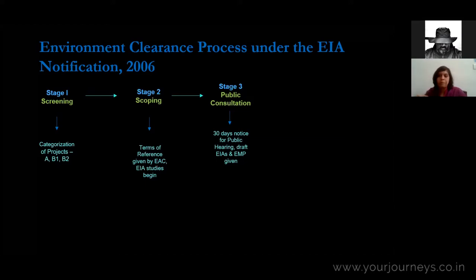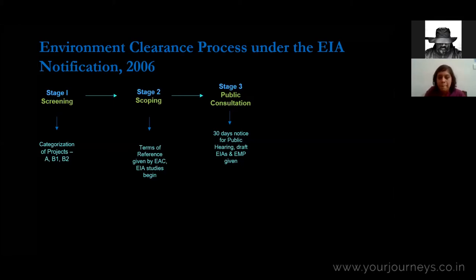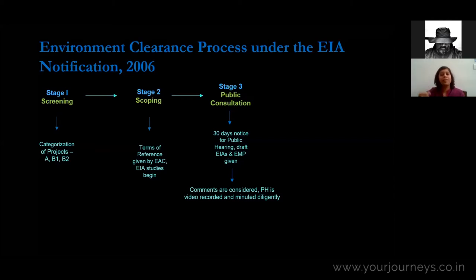If a project affects multiple districts, multiple public hearings are held. As per the 2006 notification, there is a 30-day notice period during which a copy of the draft EIA report is provided to people affected by the project. A summary EIA report is also to be provided in the vernacular language. The public hearing is a very important and critical part of the EIA process because comments from the public during the hearing often factor heavily into litigation against a large development project.